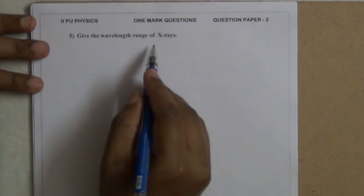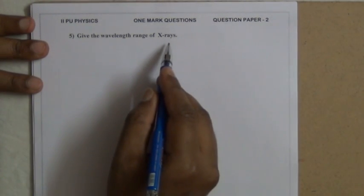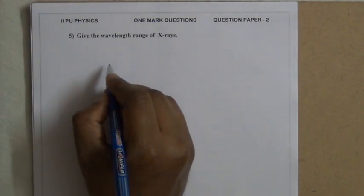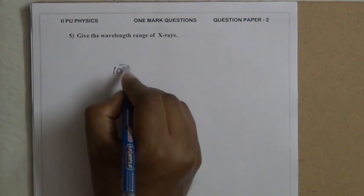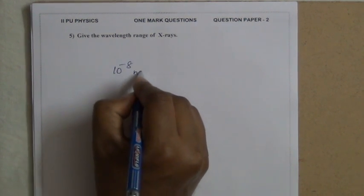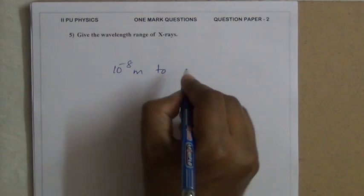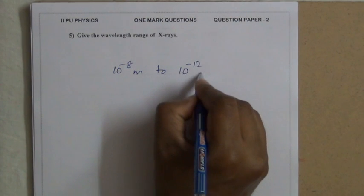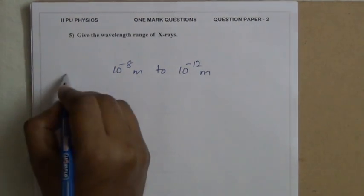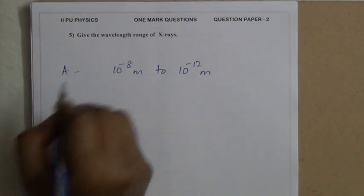Give the wavelength range of X-rays. The wavelength range of X-rays is from 10⁻⁸ meters to 10⁻¹² meters.